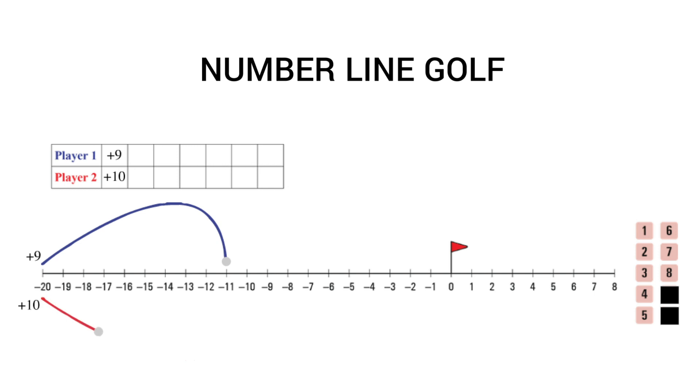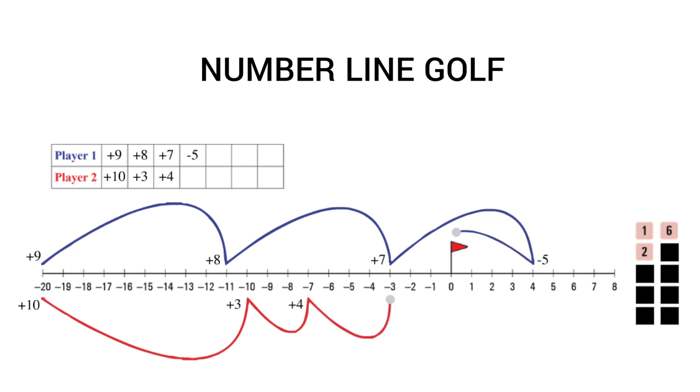The aim of Number Line Golf is to take turns to select cards and be the first person to get the ball in the hole, or to be the closest person to the hole when all the cards run out.